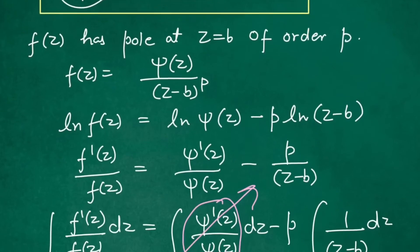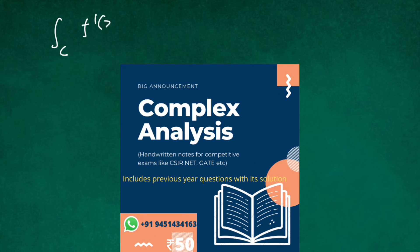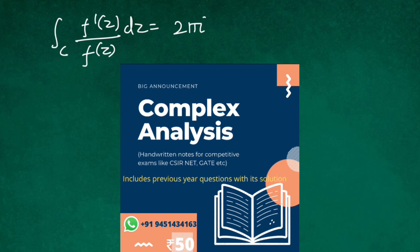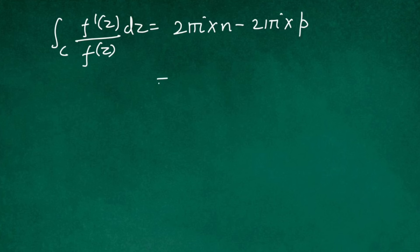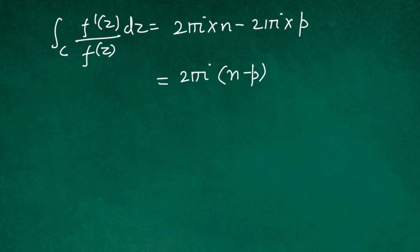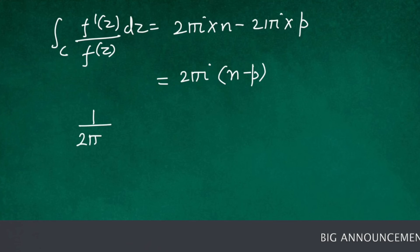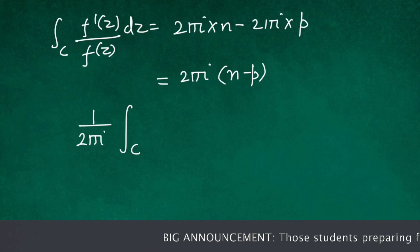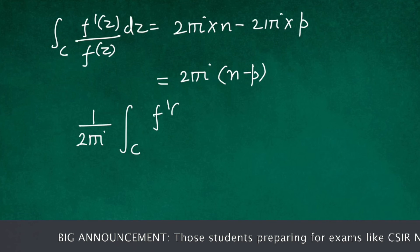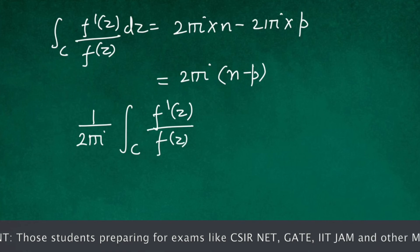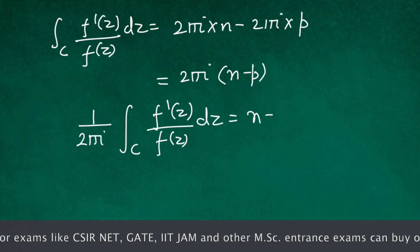Substituting both results: the integral of f′(z)/f(z) along C equals 2πi · n − 2πi · p. Taking 2πi common on the right-hand side gives 2πi(n − p). Therefore, (1/2πi) times the integral of f′(z)/f(z) along C equals n − P.